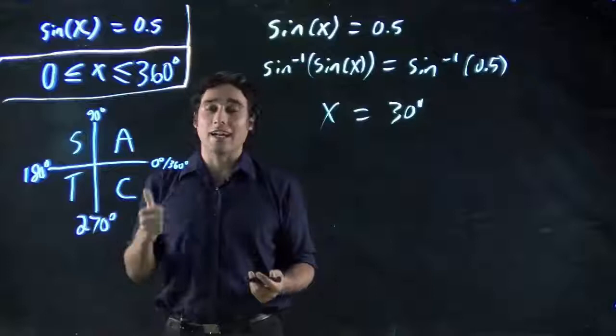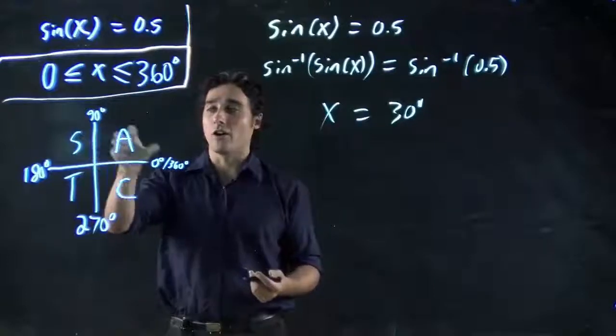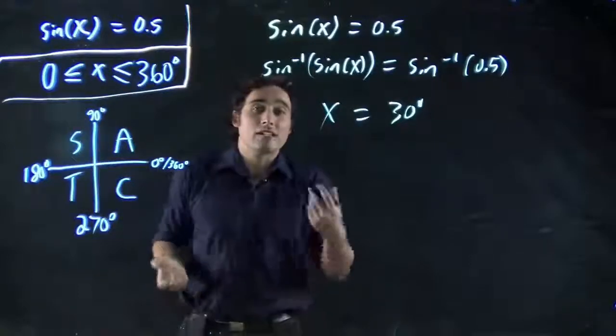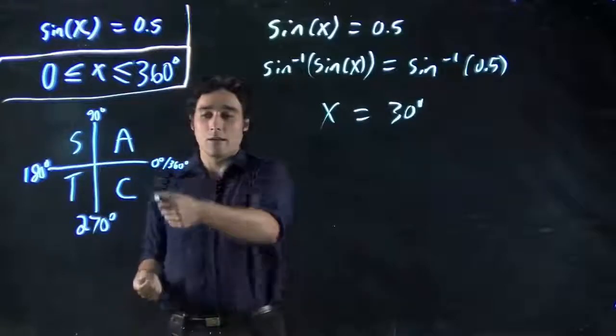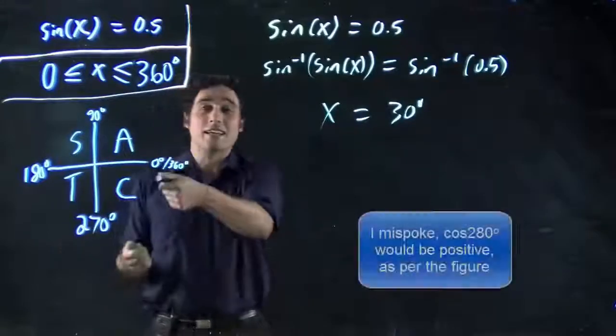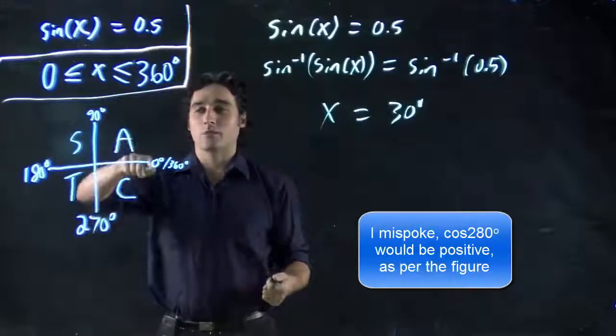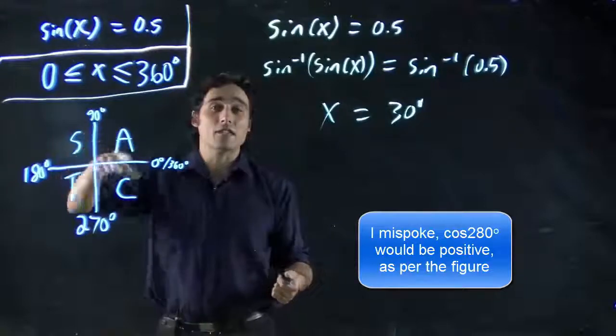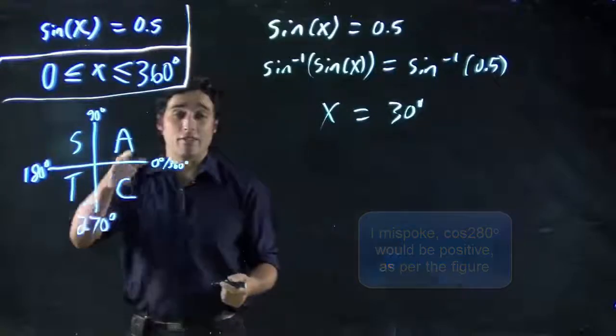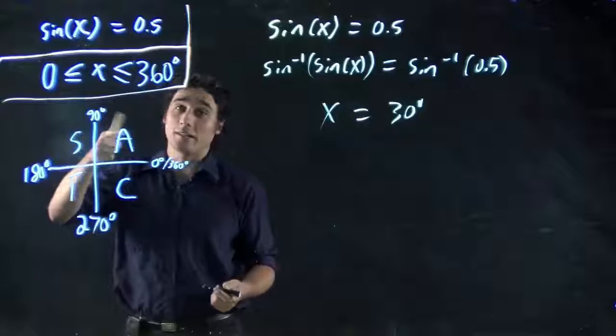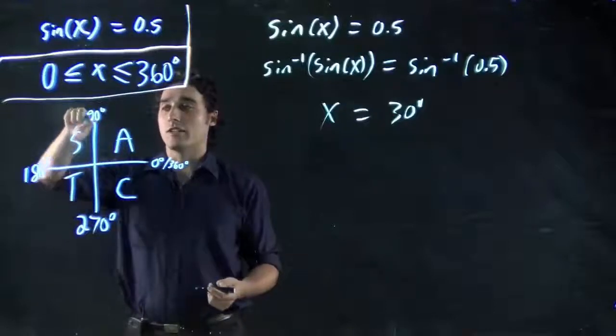C. Cosine is positive between 270 and 360 degrees. A is for all. So sine, cos, and tan are all positive between 0 and 90. In fact, double check. Make sure I'm right about this. Punch in cos of 280. You should get a negative number. You punch cos of 70. You should get a positive. Sine of 70, positive. Tan of 70, a positive.